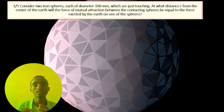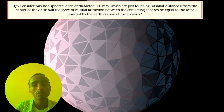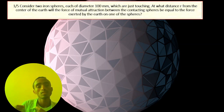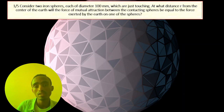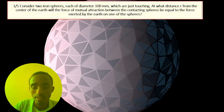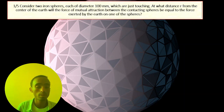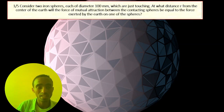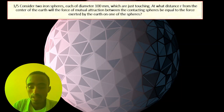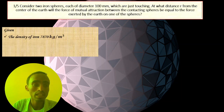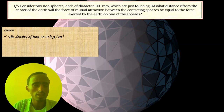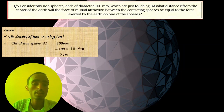Here we are given two identical spheres with a diameter of 100 millimeters, and they are just in contact. We need to determine the radius from the center of the Earth when the force of mutual attraction between the spheres equals the force exerted by the Earth on the spheres. First we must calculate the mass. The density of iron is given as 7817 kilograms per meter cubed.